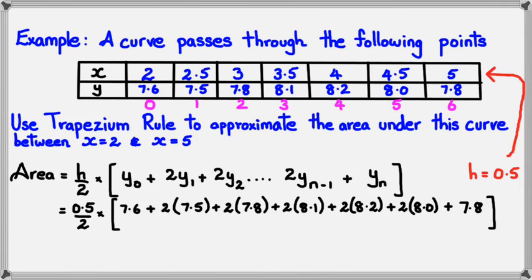You chuck this in the calculator, simplify it. Our approximation should be 23.65, and that's the area, so we're just going to put unit squared there. That's basically how you use the trapezium rule given a set of following points.